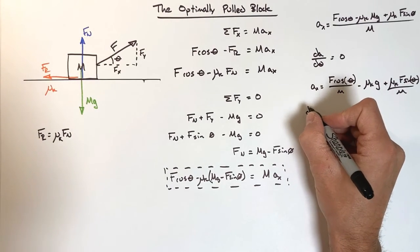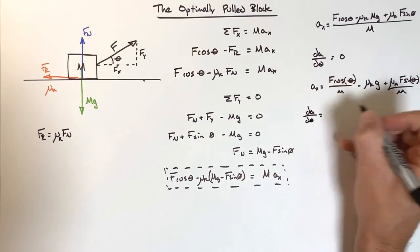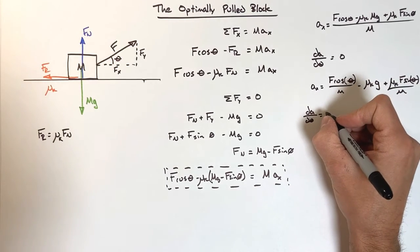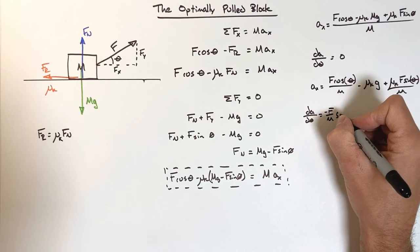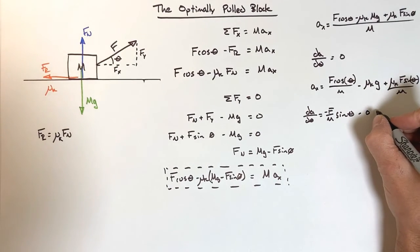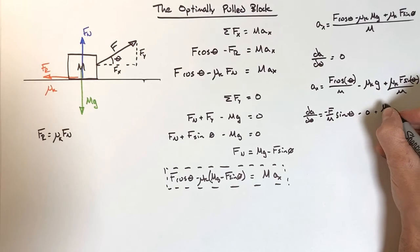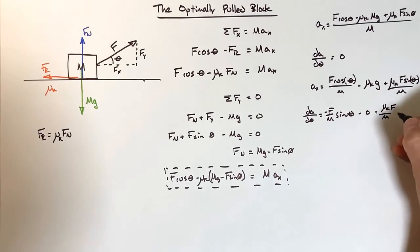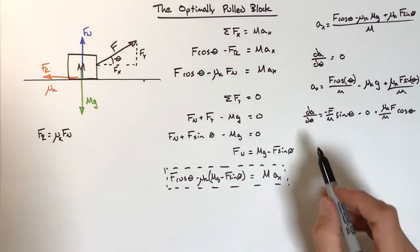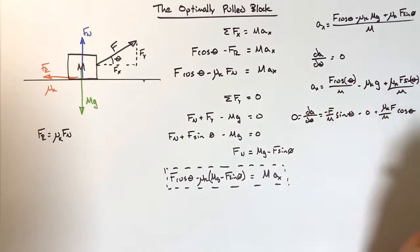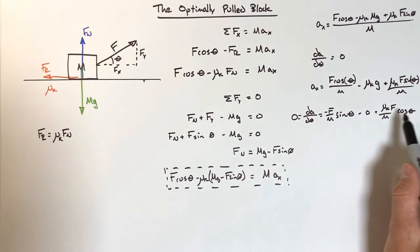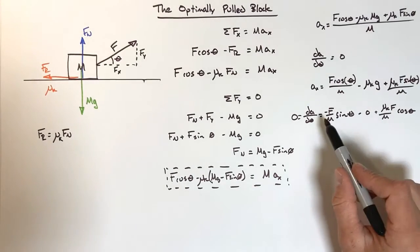Taking the derivative: the derivative of cosθ is negative sinθ, and the derivative of sinθ is cosθ. So da/dθ equals negative F over m times sinθ, plus μk·F over m times cosθ, and we set this equal to zero. Moving the sine term to the other side, we get μk·F cosθ over m equals F sinθ over m. The F and m cancel from both sides, leaving μk cosθ equals sinθ.